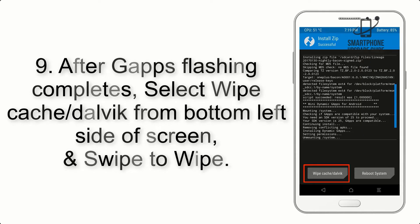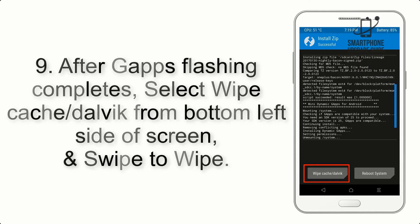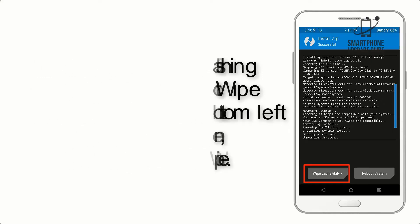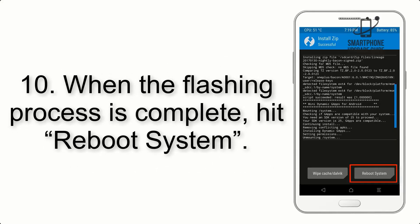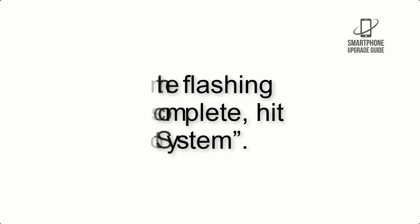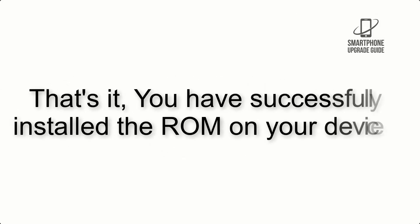Step 8: Flash the GApps zip package in the same manner. Step 9: After GApps flashing completes, select Wipe Cache and Dalvik from the bottom left side of the screen and swipe to wipe. Step 10: When the flashing process is complete, hit Reboot System. That's it — you have successfully installed the ROM on your device.